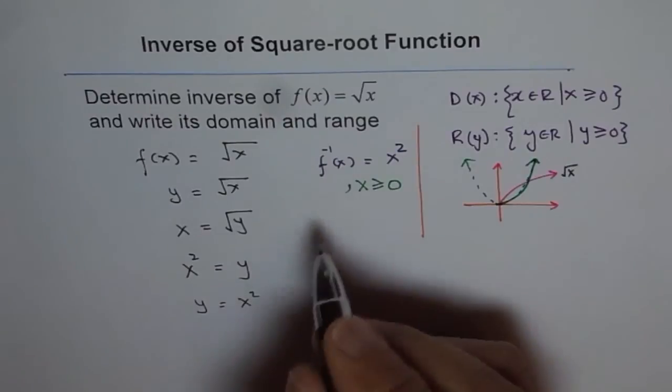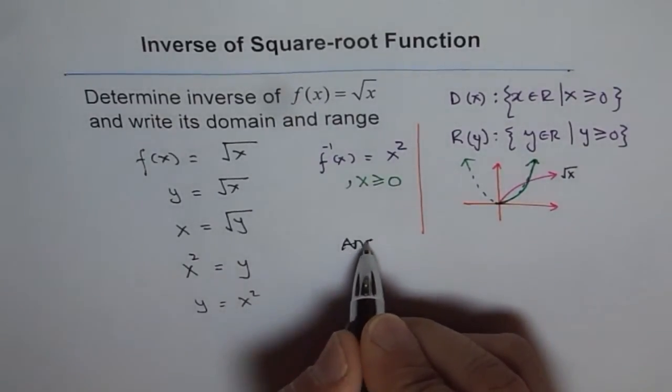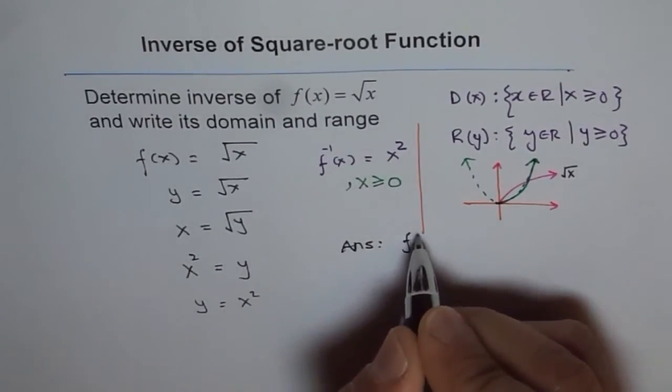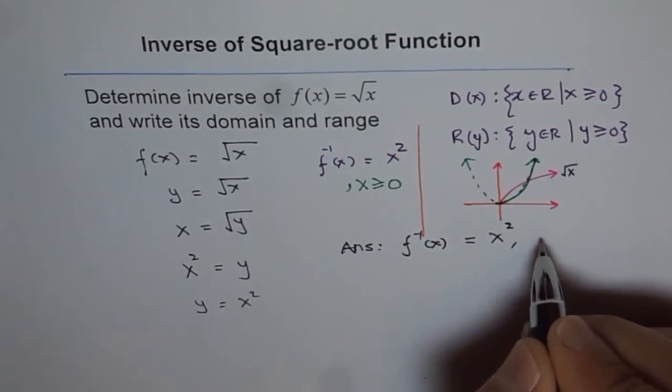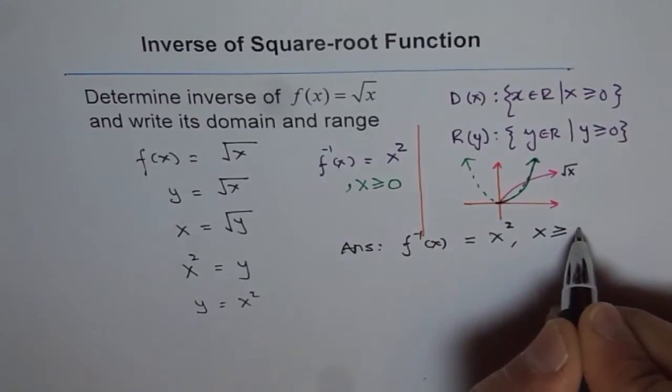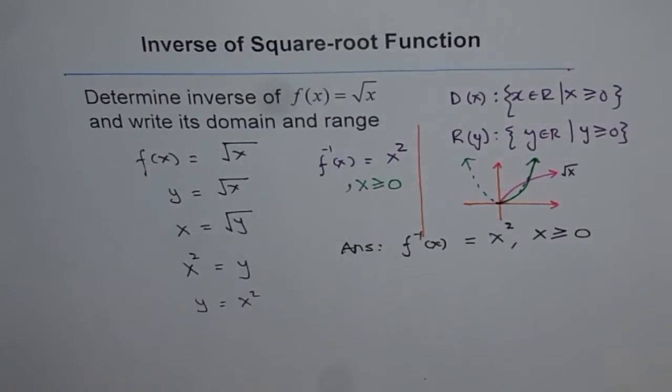So truly speaking, the answer for this is that f inverse of x is equal to x square where x is greater than or equal to zero. Do you understand that part?